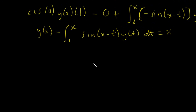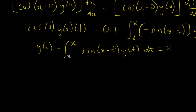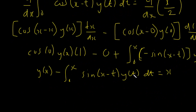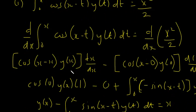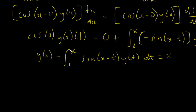We are done with the first differentiation. We have y(x) — when we move the integral to the right — but we still see an integral here. Unfortunately we can't do anything about this integral; we can't substitute anything to clear it. Since the integral persists, we have to go on and do another differentiation of the whole equation. The main aim is to clear the integral so we have a pure differential equation.